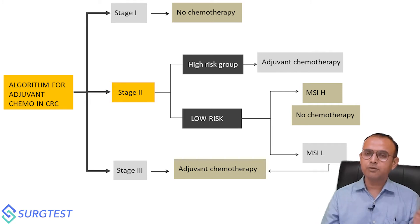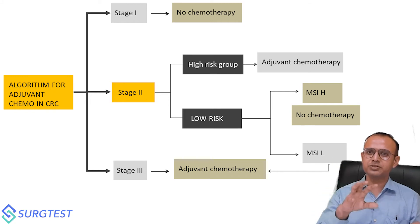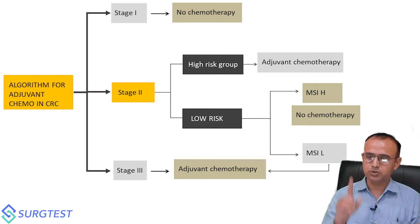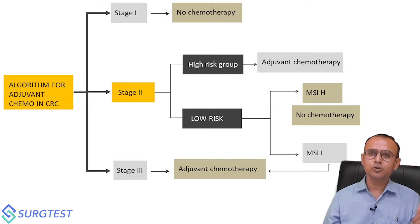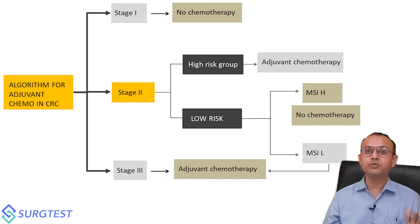In stage two disease with high-risk features — those seven factors — chemotherapy is needed. For example, a 60-year-old presenting with obstruction, who underwent sigmoidectomy for sigmoid cancer, turns out to be stage two — that patient definitely needs chemotherapy because of obstruction as a high-risk feature. If any of those seven features are present, there is no question — chemotherapy is required.